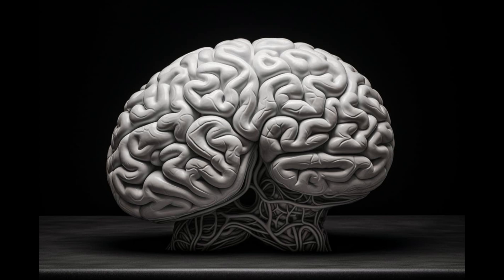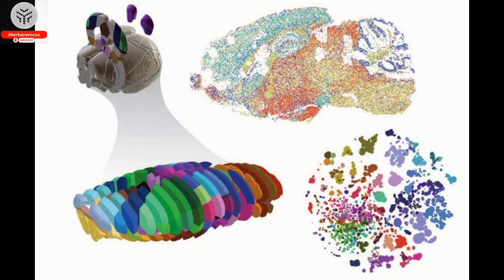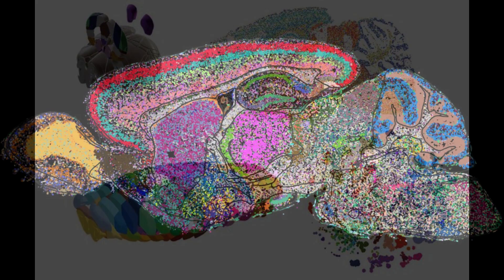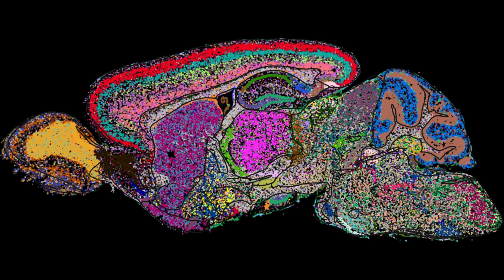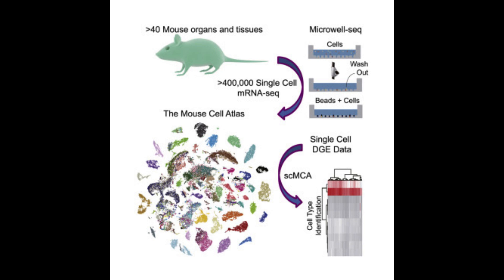According to Joshua A. Gordon, MD PhD, Director of the National Institute of Mental Health, the mouse atlas has provided researchers with an unprecedented level of detail on the intricate network of mammalian brain cells. This newfound understanding is crucial for comprehending human brain function and diseases.